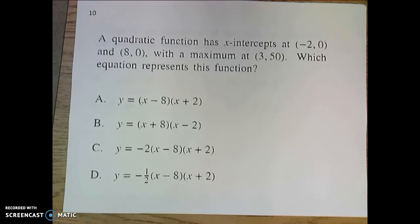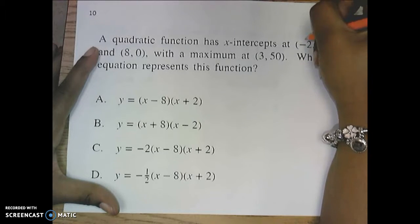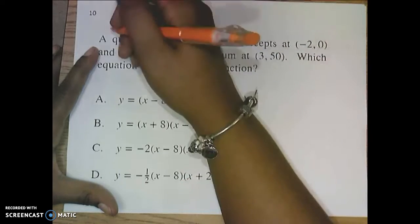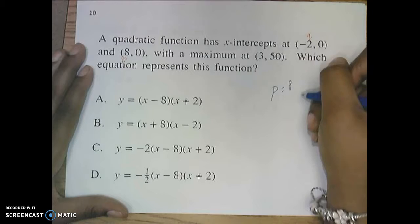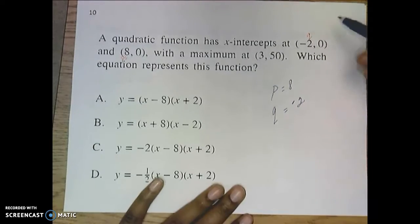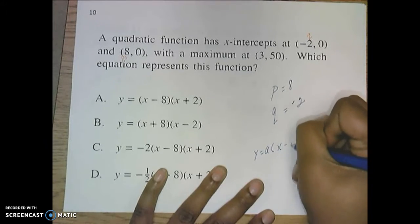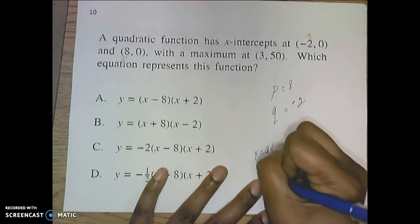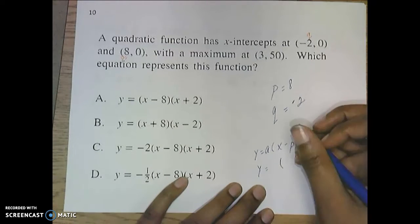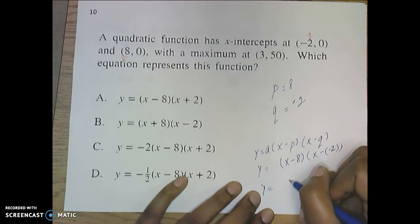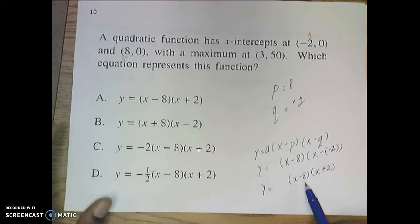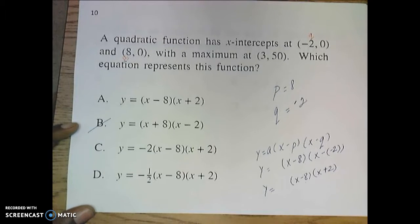Feel free to pause at any point. But a quadratic function has x intercepts negative 2, 0, and 8, 0, with a maximum of 3, 50, which equation represents the function. So the first thing that you have to know is that this one goes from 8 to 2. So we can let P be 8 and Q is 2. P is 8 and Q is a negative 2. Don't forget my negative sign. So what this would mean, according to the equation that we have been studying in class for the past couple days now, then whatever A is, we'll let it be. But what definitely has to be in your equation is x minus 8 times x minus a negative 2, which is the same thing as y is equal to x minus 8 times x plus 2. So just on that formality alone, we can get rid of B, and that's it.